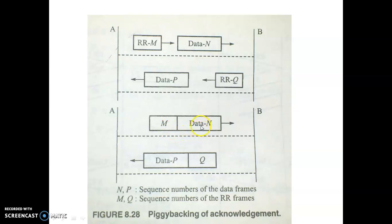Instead of sending the data and RR separately, they are combined together. One important point: only RR can be piggybacked on the data frame. REJ, SREJ, and RNR cannot be piggybacked. So in piggybacking, only RR is piggybacked.